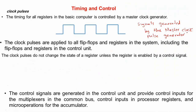The timing for all registers in the basic computer is controlled by a master clock generator. The master clock pulse generator generates timing signals, and these signals are applied to all flip-flops, registers, counters, etc. in the system, including the flip-flops and registers in the control unit. The clock pulses by themselves do not change the state of a register unless the register is enabled by a control signal.